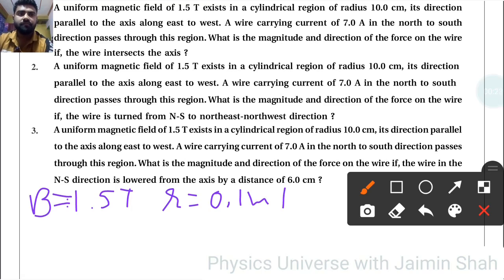A wire carrying current I equals 7 ampere in the north to south direction passes through this region. What is the magnitude and direction of the force on the wire if the wire intersects the axis?